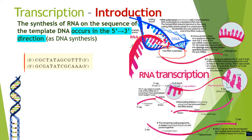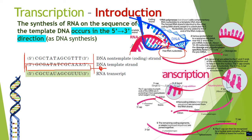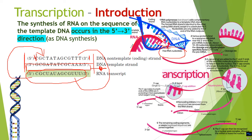Taking an example: only one strand serves as the template strand. The 3' to 5' sequence serves as the template, or coding strand, which is decoded by the machinery to form RNA. The RNA sequence is coded based on this template and represents the other strand, also called the coding strand, because its sequence is almost similar to the RNA — except that wherever there is T in DNA, there is U in RNA.